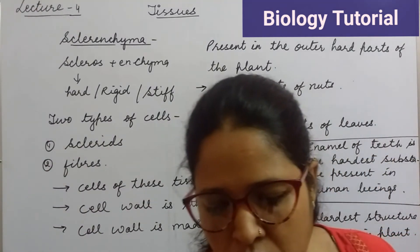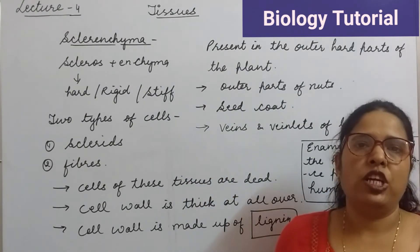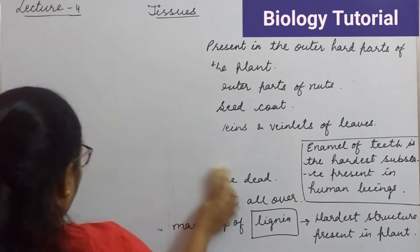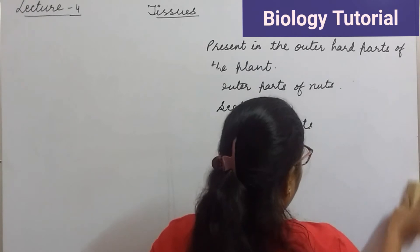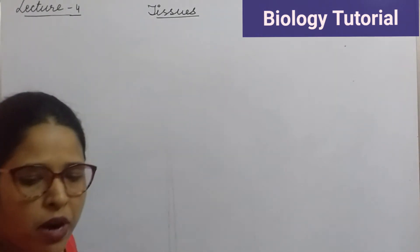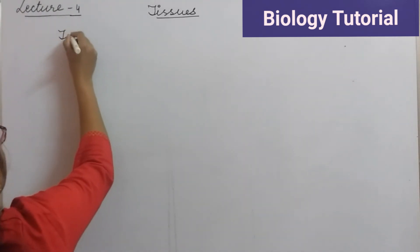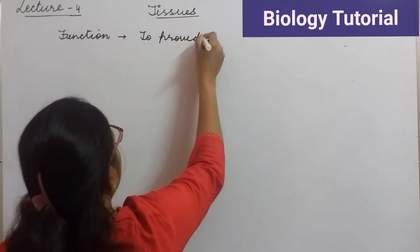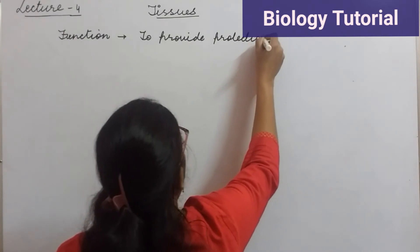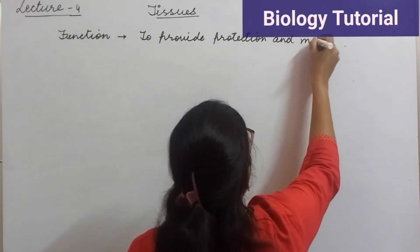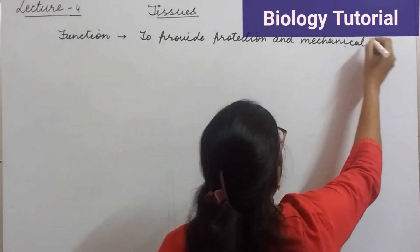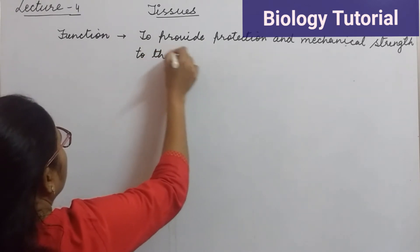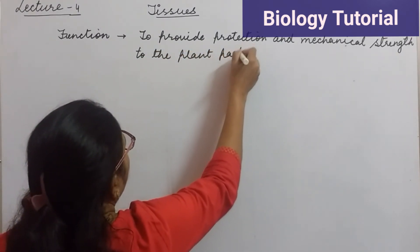The one and only important function of sclerenchyma tissues is to provide protection and mechanical strength to the plant parts. This is because sclerenchyma is found in the outer parts of the plant.